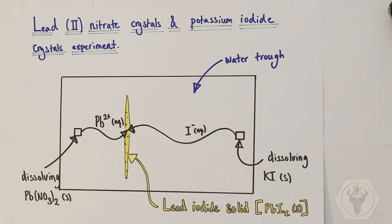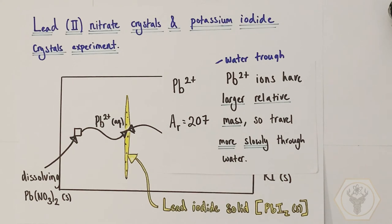The lead ions, drumroll please, have the larger relative mass of the two ions present. So lead ions have a relative mass of 207 from the periodic table. That's quite a large relative mass. So they will be travelling more slowly through the water.